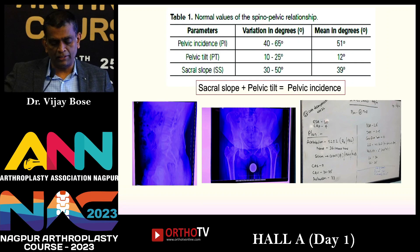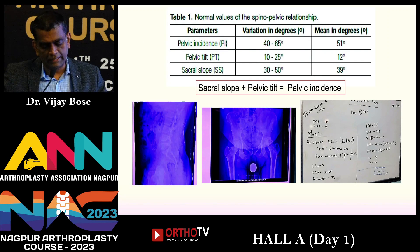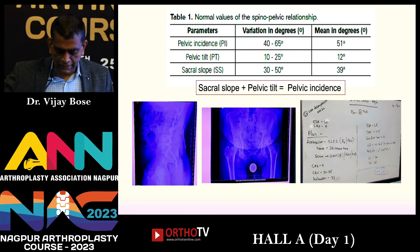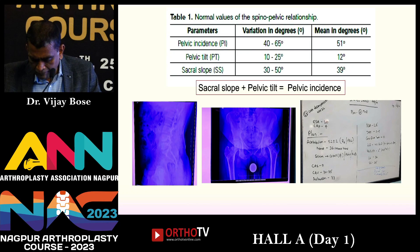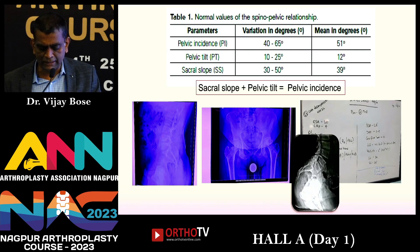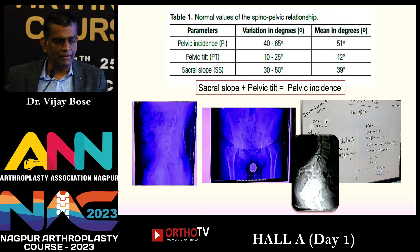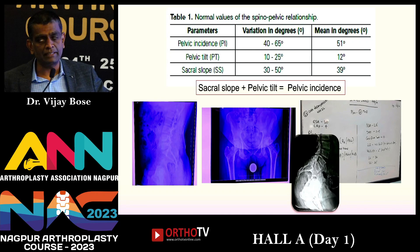Looking at normal values, a posterior pelvic tilt of 12 degrees is normal. One patient here has a pelvic tilt of around 8 degrees — acceptable. But another patient has an anterior pelvic tilt with a non-fused spine. If you follow the standard approach for this patient, you will run into problems. This patient clearly has an anterior pelvic tilt that must be accounted for.